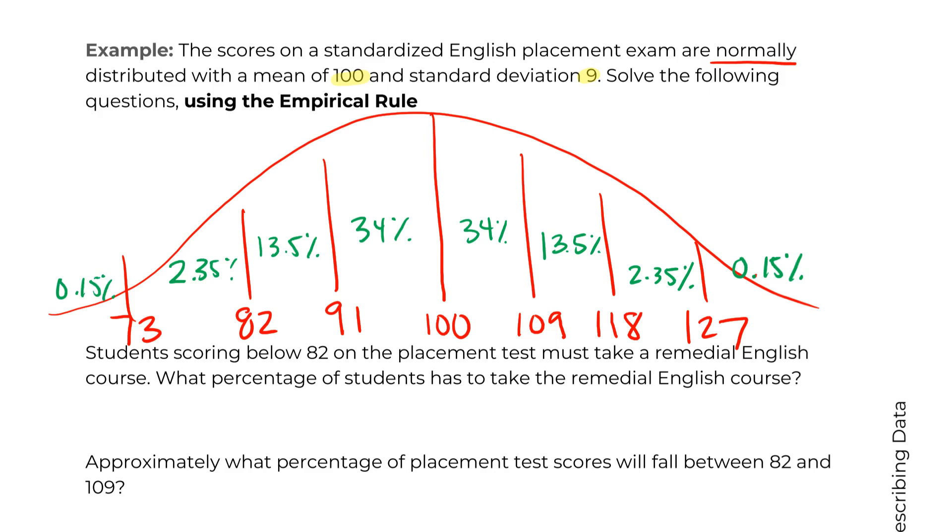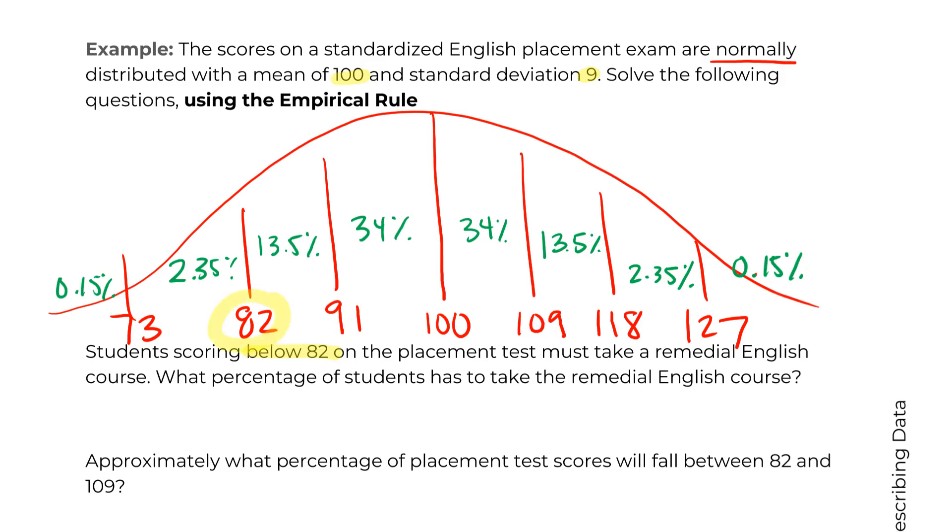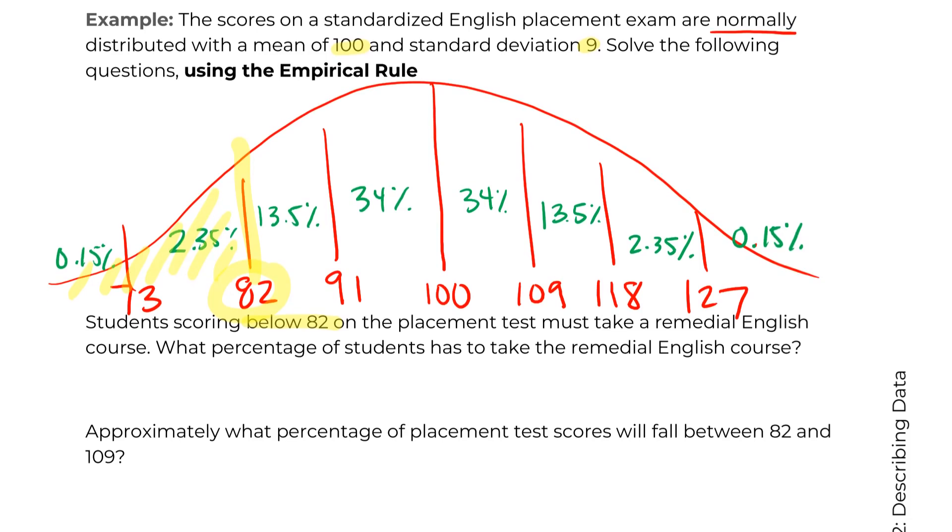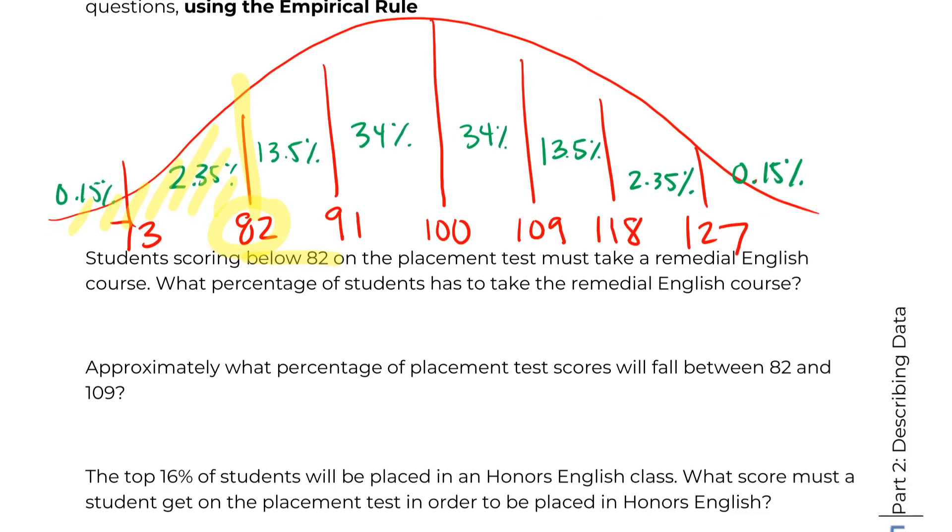All right. So our first question here says, students scoring below an 82, so 82 and below, looks like we're interested in this area, must take a remedial English course. What percent of students have to take the remedial English course? Well, exactly the same as the last one. We're just going to take these two percents and add them up. So 0.15% plus 2.35% is equal to 2.5%. The exact same chance as an adorable fluffy kitten weighing more than 4.4 pounds.